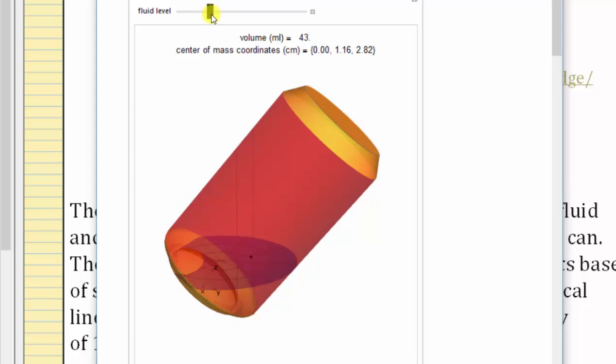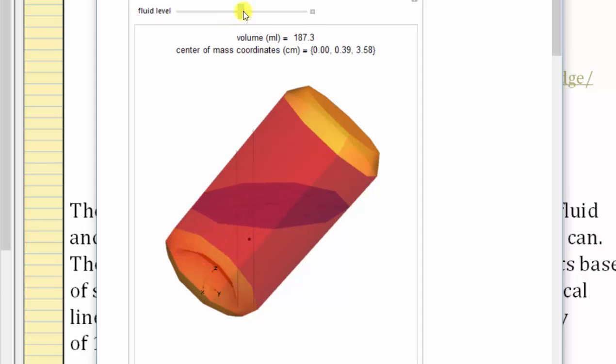It will remain balanced on its edge until the fluid level reaches approximately this level here, because once again the center of mass is now outside the vertical lines and not above the base of support.